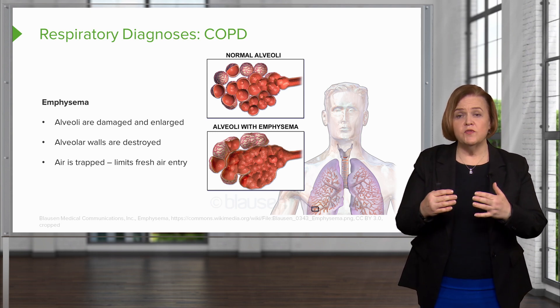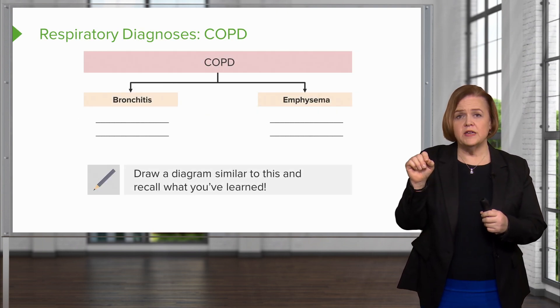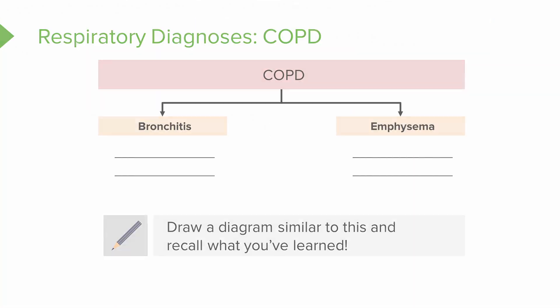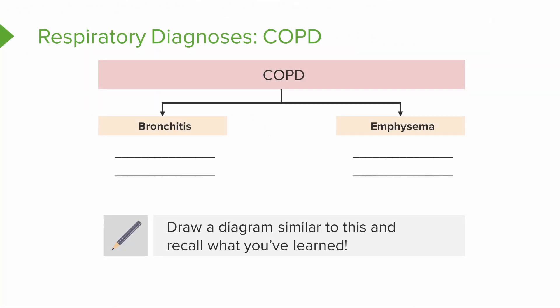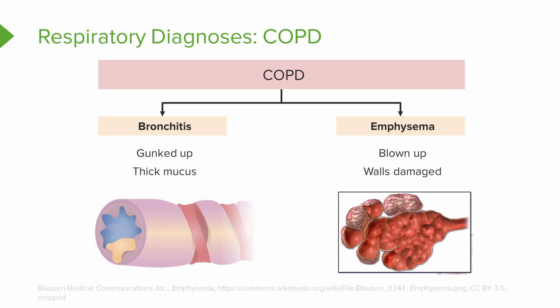Before we move on, write in the margin of your notes the word COPD at the top, then draw a branch to the right and a branch to the left. Under one branch write emphysema, and in the other write bronchitis. Here's how I remember it: bronchitis is gunked up, emphysema is blown up.